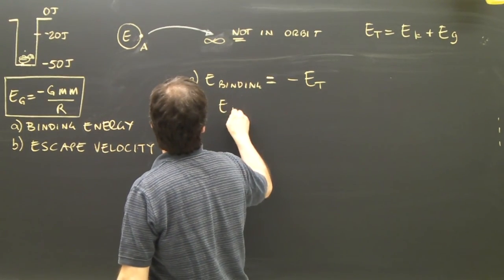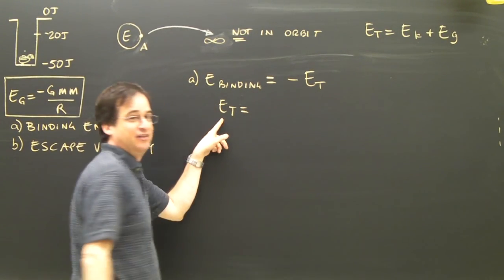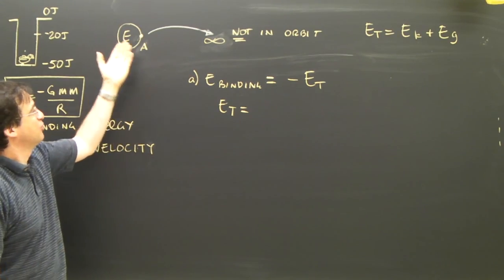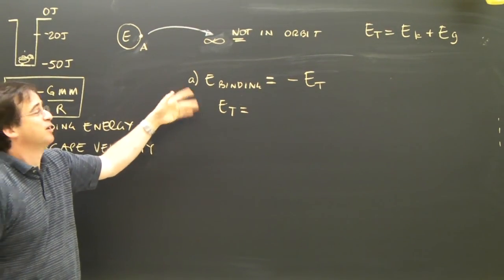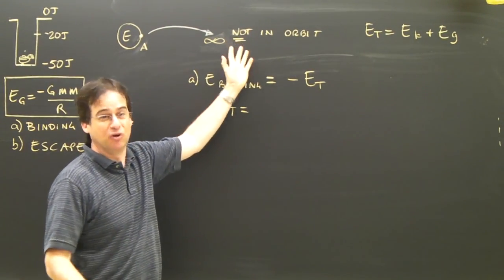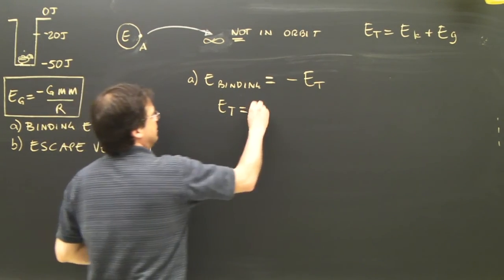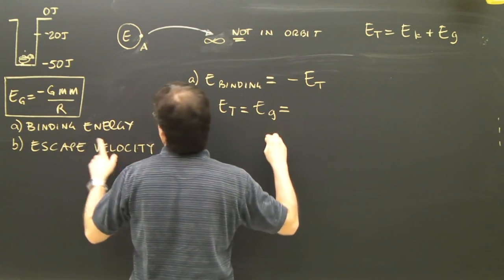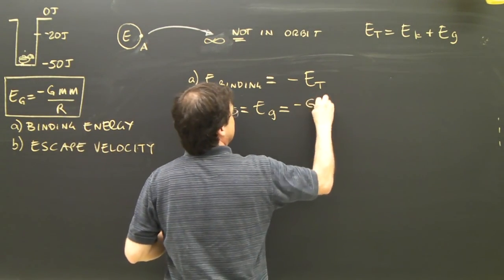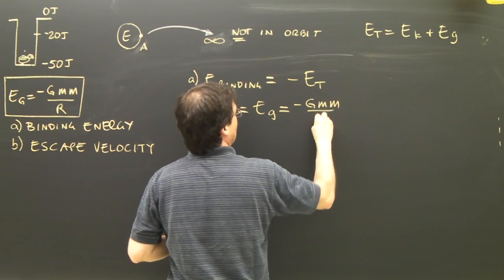So the binding energy is the total energy. And the total energy, well, what are we dealing with? Gravitational energy and kinetic. But it's not going in orbit, so no kinetic. The total energy is equal to the gravitational energy, which is negative GMm over R.